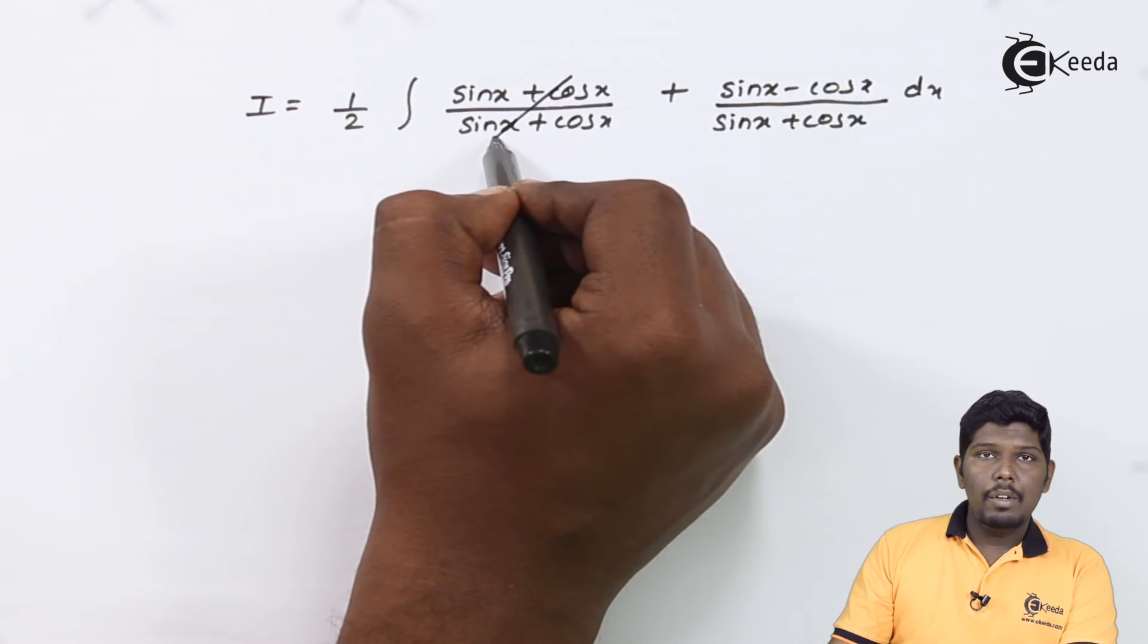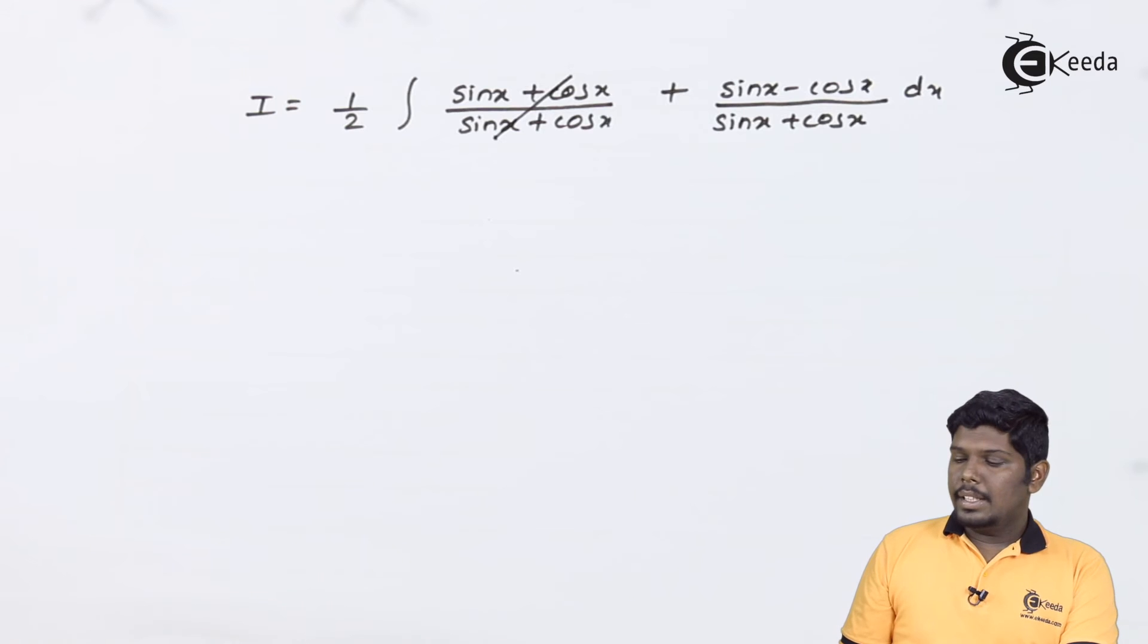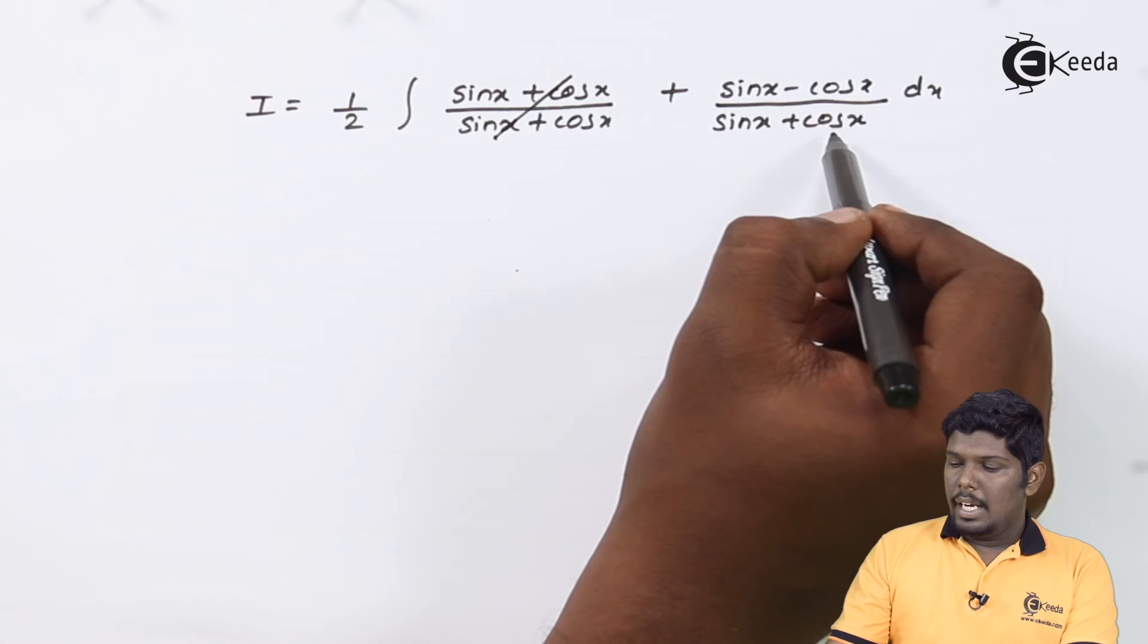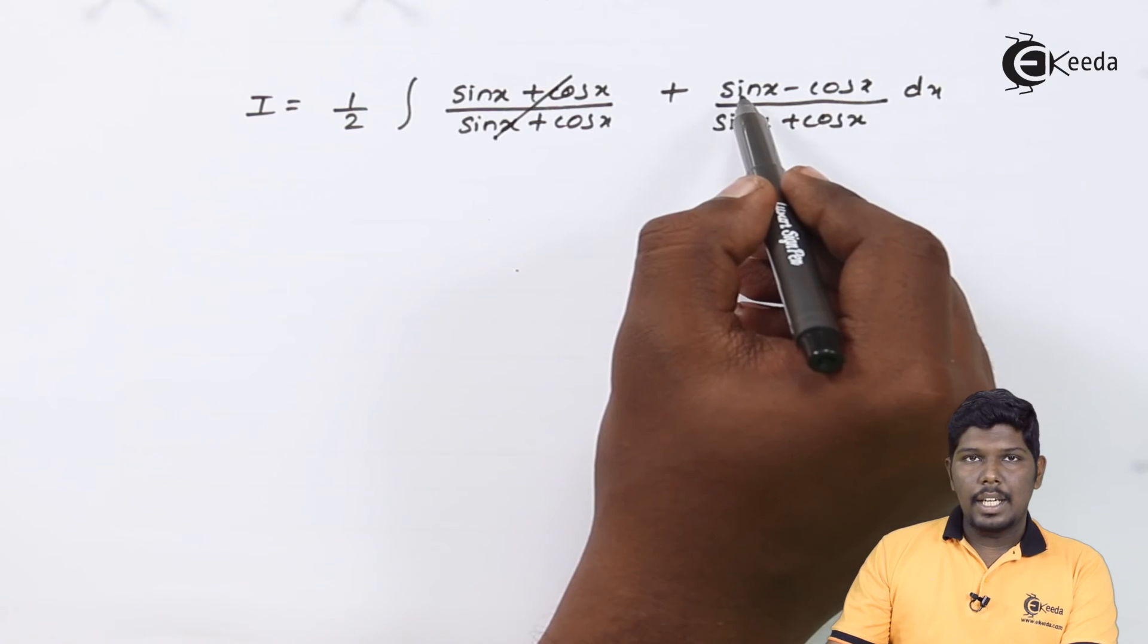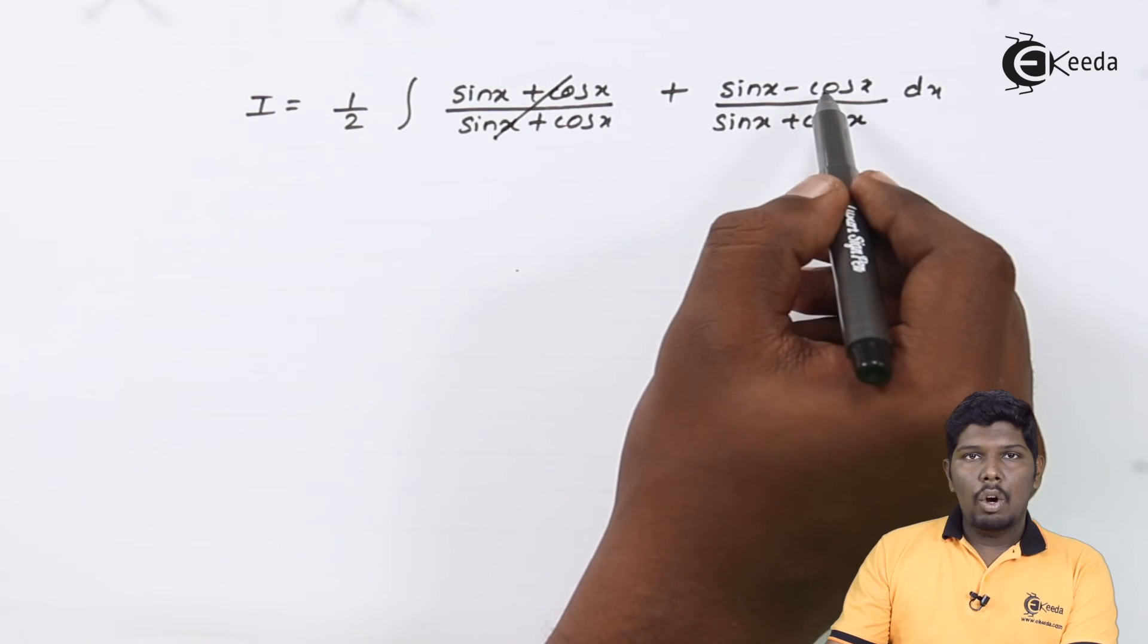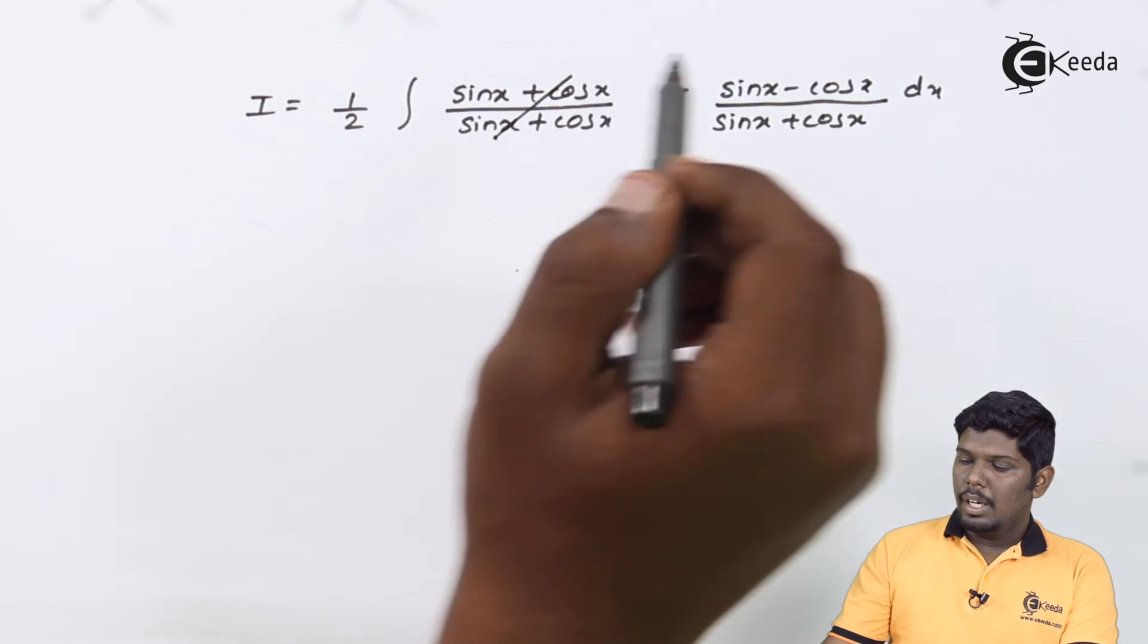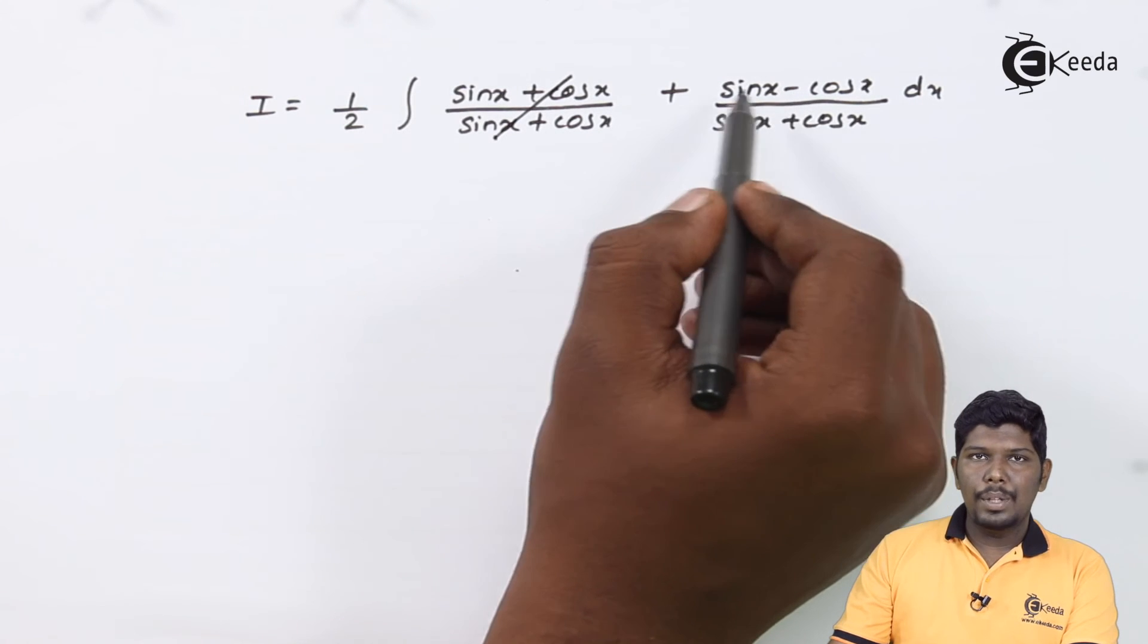Here, the first part will be cancelled. And in the second part, if you check, derivative of sin x is cos x and derivative of cos x is minus sin x. We have the derivative of these two terms but with opposite signs. Therefore, we can take minus 1 common from the numerator.